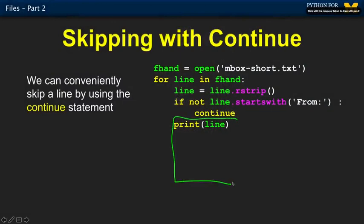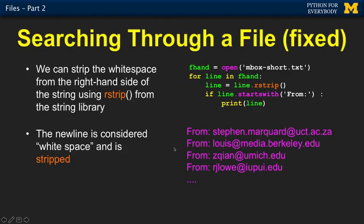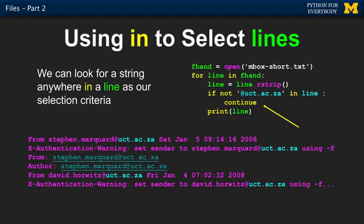We're skipping the lines we're not interested in, and because often the amount of code we'll do is quite a bit — parsing things in different ways — it's better to skip the bad lines and fall through for the good lines. We can also look for all lines that have 'UCT' using the 'in' operator: if 'UCT' is not in the line, skip it. That finds lines that somewhere inside them have 'UCT' and prints those out.